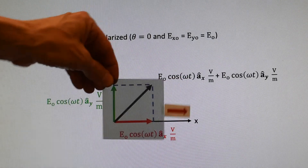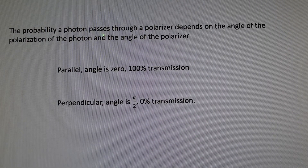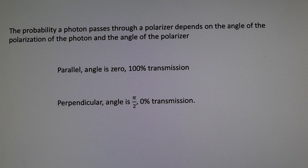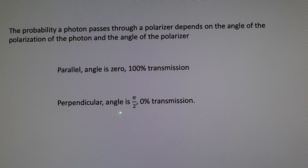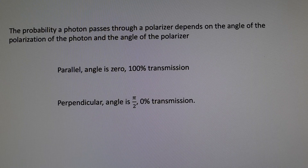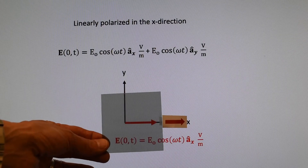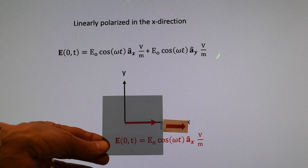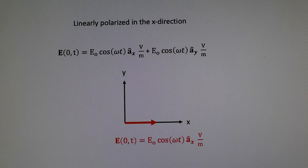Now we are going to introduce a polarizing filter. The probability a photon passes through a polarizer depends on the angle of the polarization of the photon and the angle of the polarizer. When they are parallel — that is the angle is 0 degrees — there is 100% transmission. When they are perpendicular — that is the angle between them is 90 degrees or pi over 2 radians — there is 0% transmission. So when the polarizer is aligned in the x direction, the y component will be completely absorbed and only the x component will come through; the electromagnetic wave is linearly polarized in the x direction.